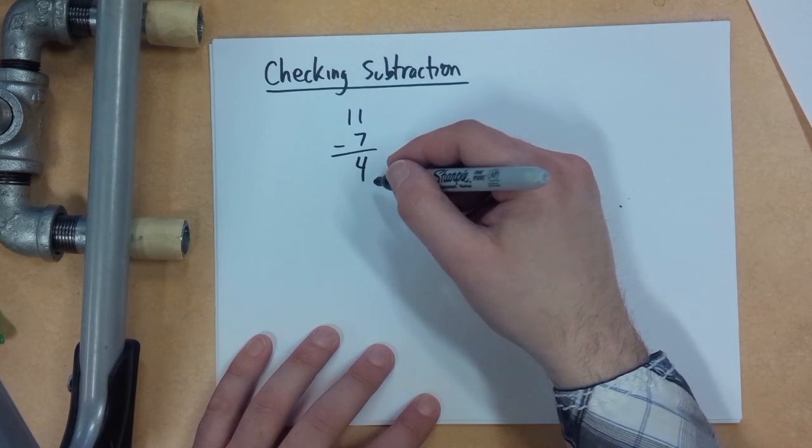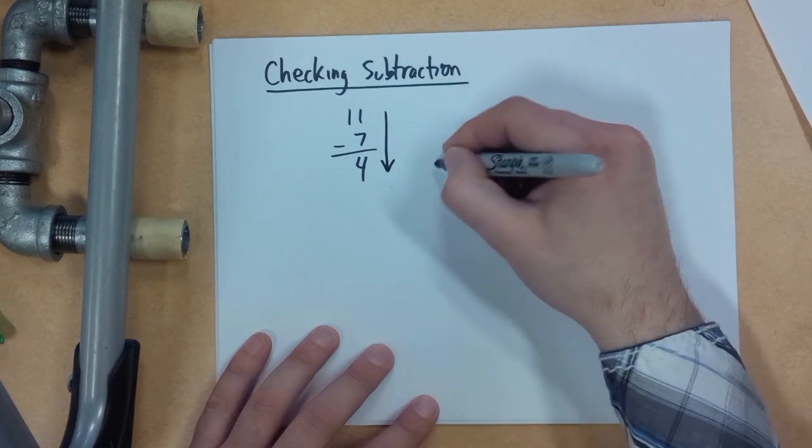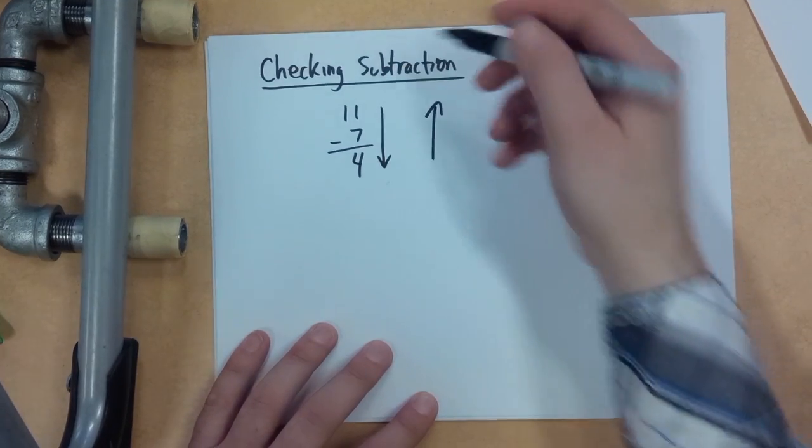Now to know if I'm correct, I'm going to go the opposite way. I'm going to think the opposite way: 4, 7, 11.